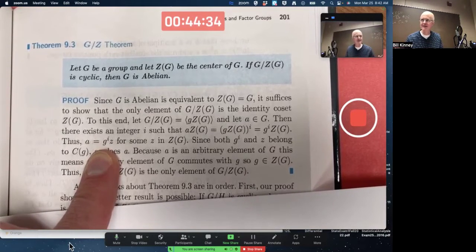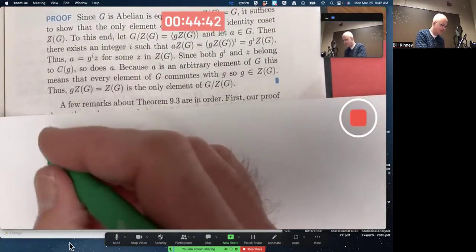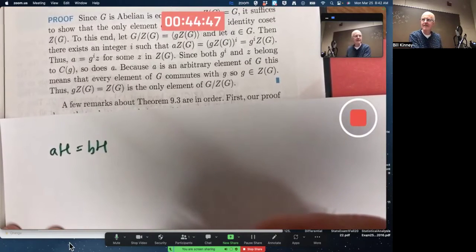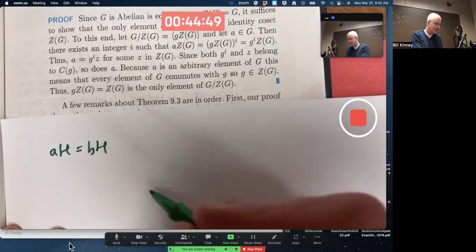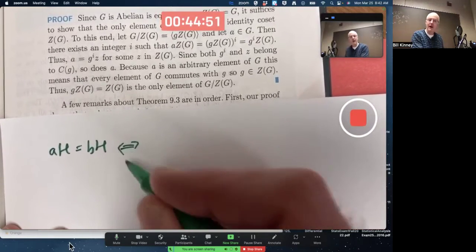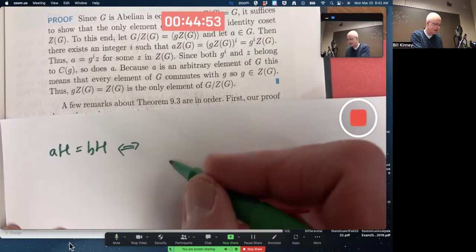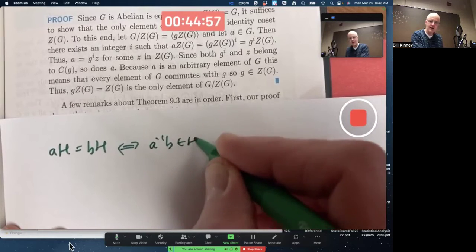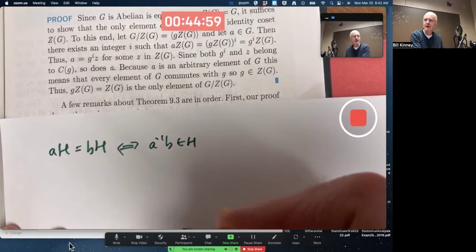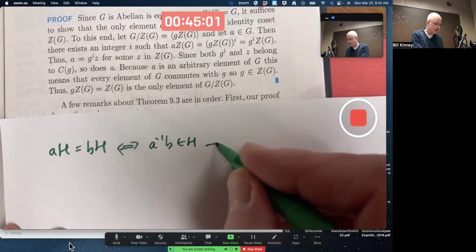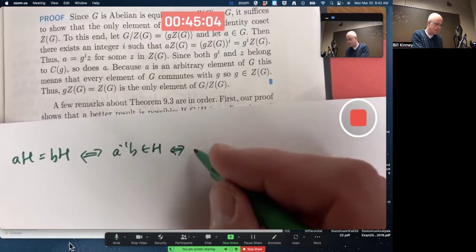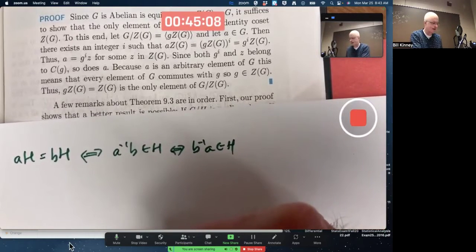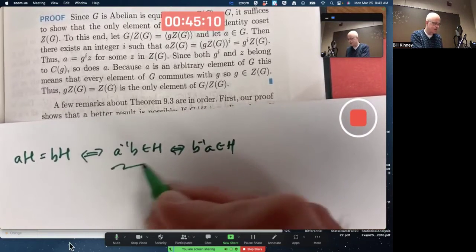Properties of cosets. If aH equals bH, that's equivalent by properties of cosets to a inverse b being in H, which is equivalent also to its inverse being in H, which is b inverse a.